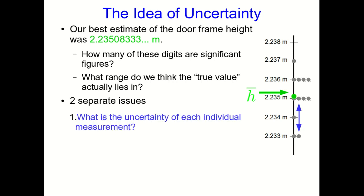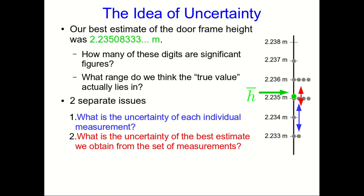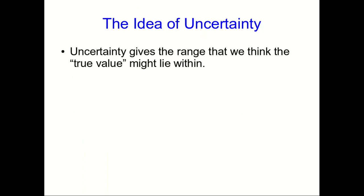There are actually two separate issues. First of all, what's the uncertainty of each individual measurement? And that's not quite the same as what the uncertainty is in the best estimate itself. The underlying idea of an uncertainty is that it's a range that you believe the true value might lie within.